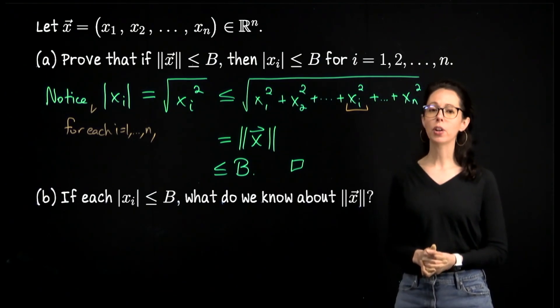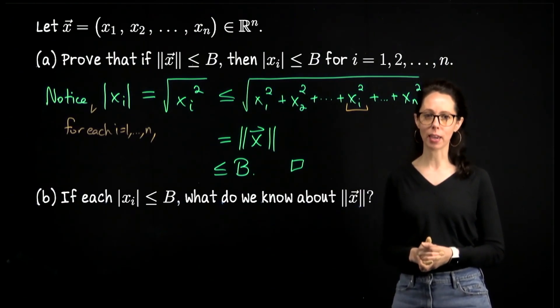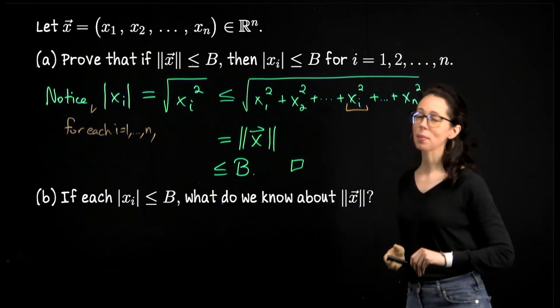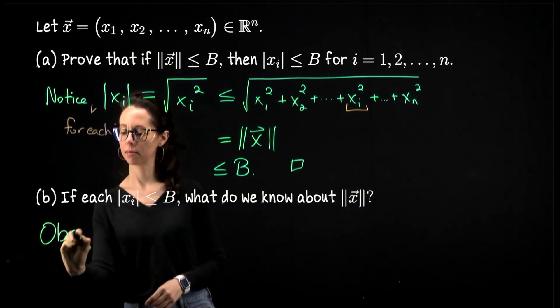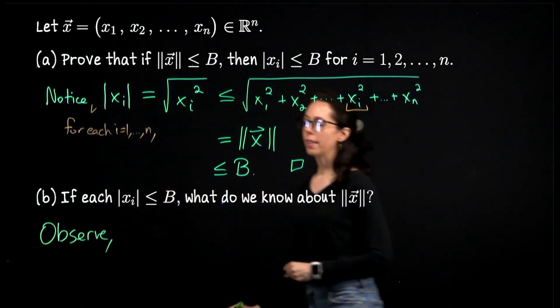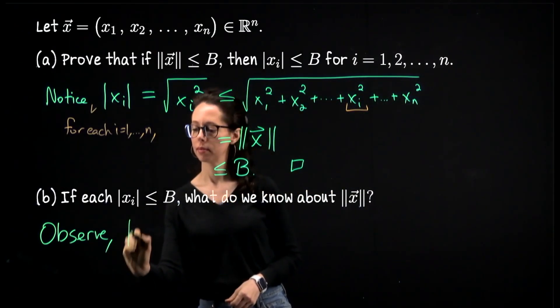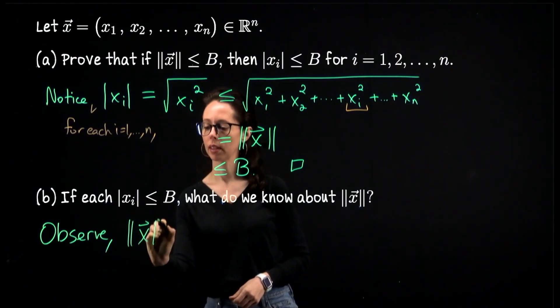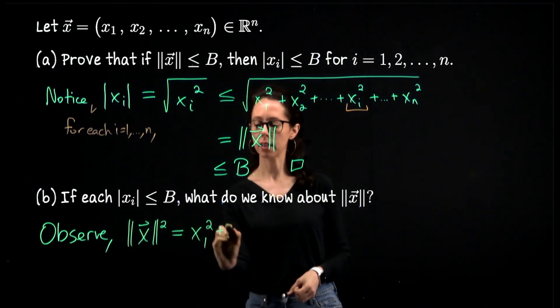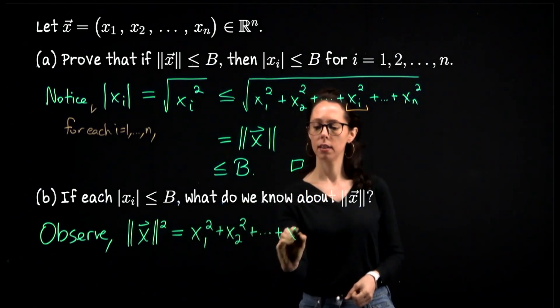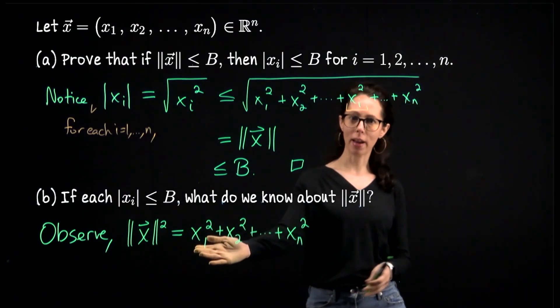For part b, we know that each coordinate in the vector x is bounded above by the same number B. What is the best statement that we can make about the norm of x? So this is something that we are asked to work out. All right, let's observe. I think what I will do is take the norm of x and square it just so that I don't have to write giant square roots. The norm of x squared is the inside of this radical. So that's going to be x_1 squared plus x_2 squared plus x_n squared, like that. Each of these numbers is bounded above by the non-negative number B.